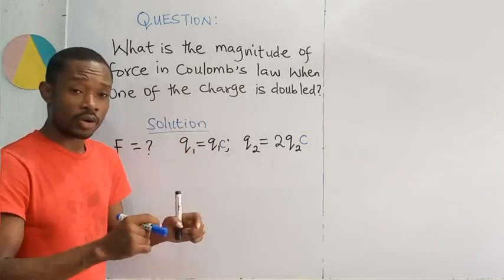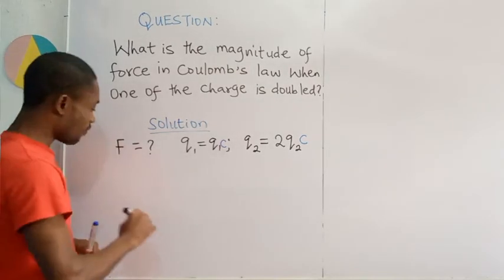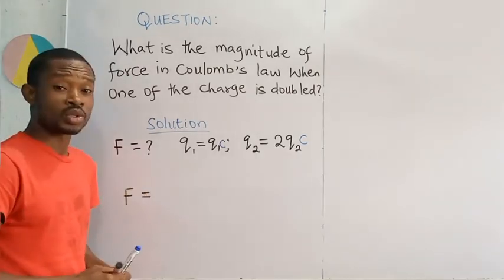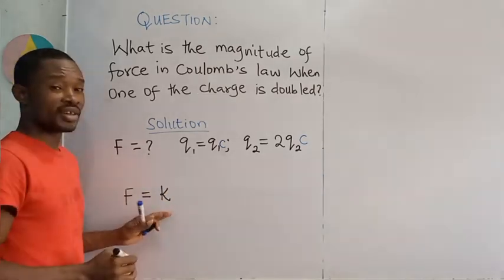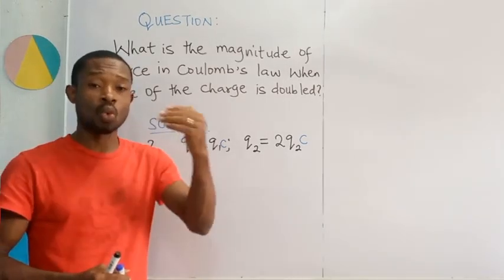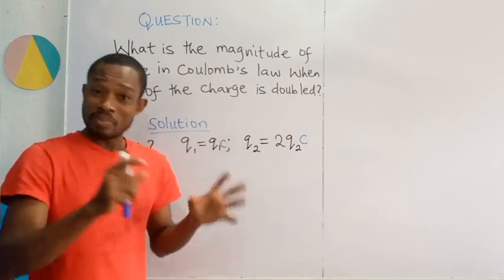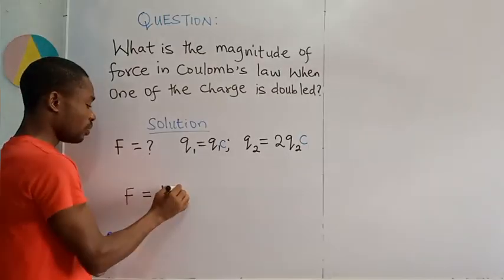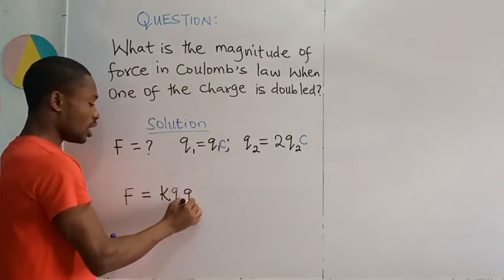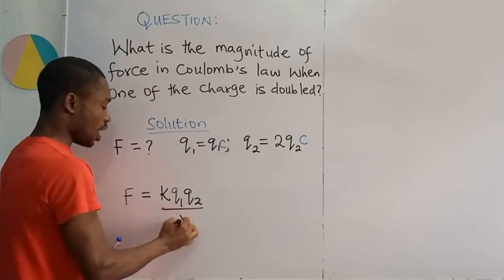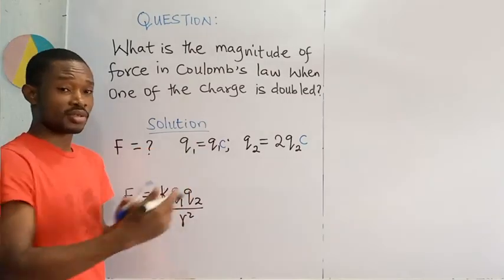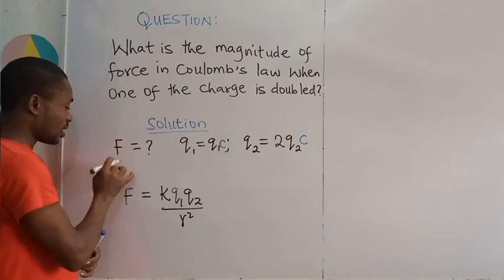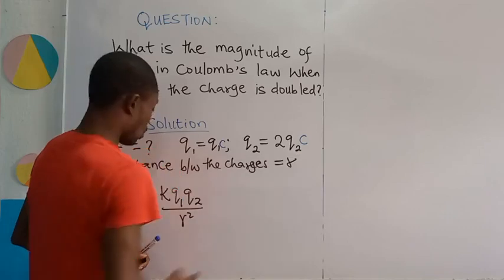This question is Coulomb's law. And so, we are going to recall the formula for Coulomb's law. F is equal to, that is the force between the two charges, there is a constant of proportionality which is equal to 1 over 4 pi epsilon naught. That epsilon is permitivity of free space. And now this is going to be Q1 times Q2 and then divided by the square of the distance between the two charges. Let me even indicate that distance between the two charges is going to be equal to R.